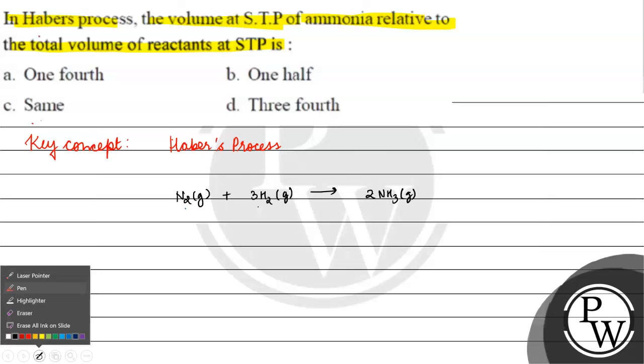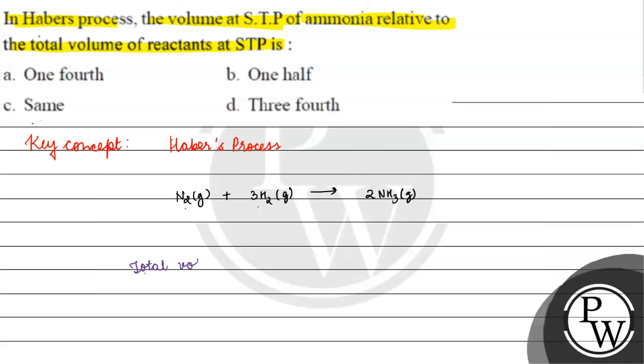Agar baat kertay hain total volume of reactants ki, total volume of reactants will be V plus 3V, that is 4V.